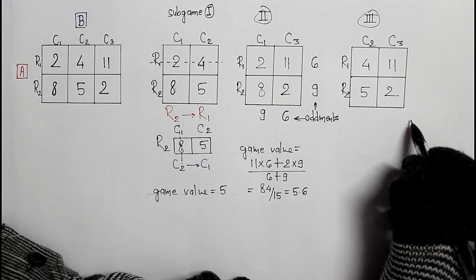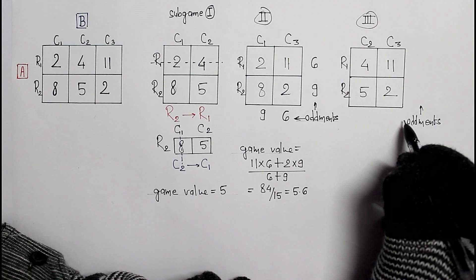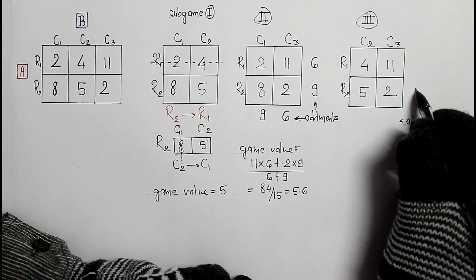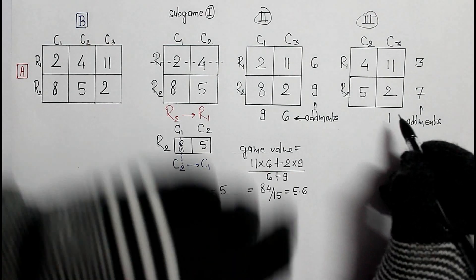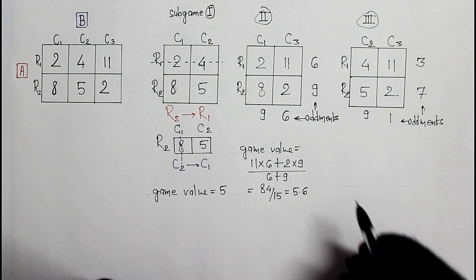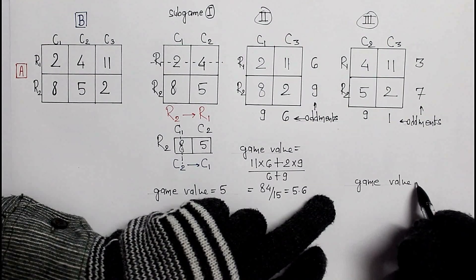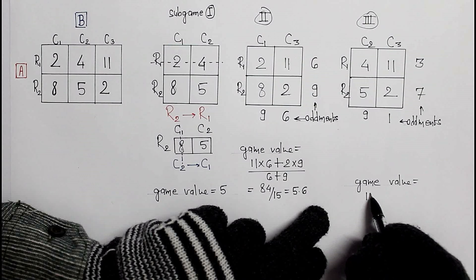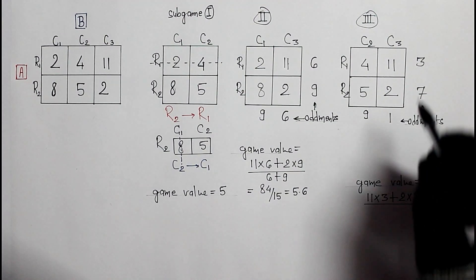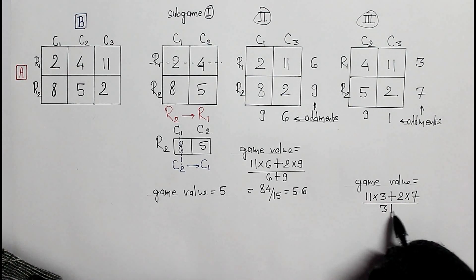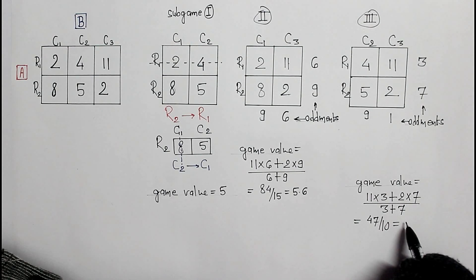For the last sub game, we again use the arithmetic procedure. The difference between the two relevant values is 7, and between 5 and 2 the difference is 3. The cross differences are 1 and 9. The game value is: (11×3 + 2×7) divided by (3+7), which equals 33 plus 14 = 47 divided by 10, giving 4.7.